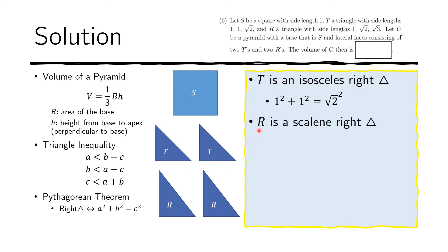We are also given triangle R, which is a right scalene triangle, because the sides again satisfy the Pythagorean theorem: 1 squared plus square root of 2 squared equals square root of 3 squared. So we have four right triangles and a square base S.